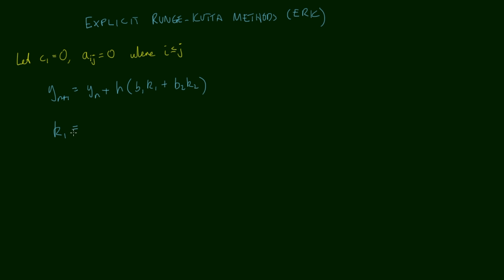But this time with K1, ordinarily we'd have F of T_n plus C1 H. Well, C1 in this case is 0, so we've just got F of T_n. The second argument was Y_n plus H times our A11 and A12. Well, A11 and A12 would both be 0 because in this case i is 1 and j is 1 or 2. So that means we've just got Y_n. So our first stage value is F of T_n Y_n.